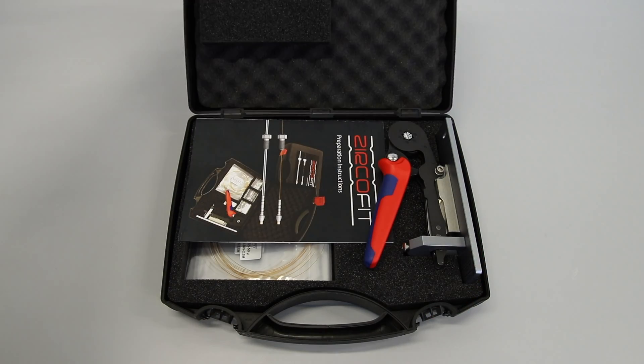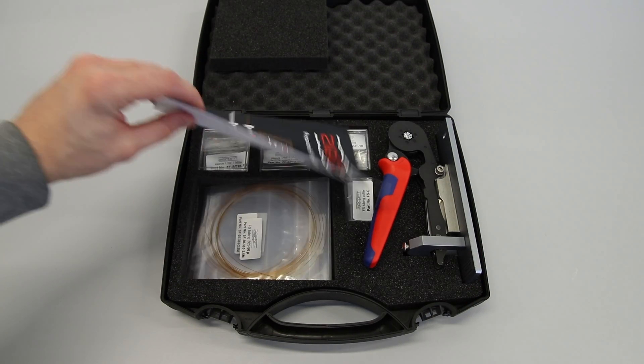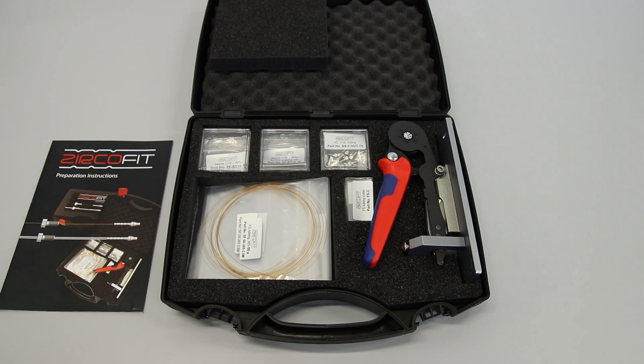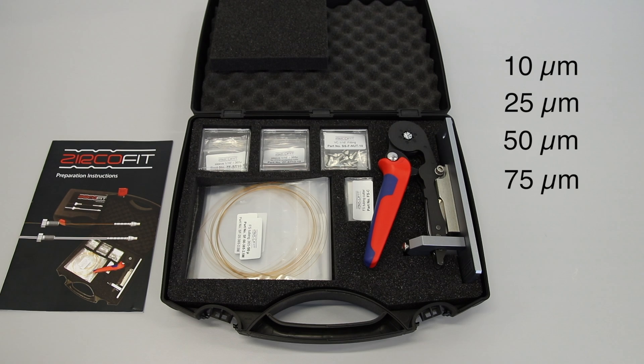The ZercoFit Starter Kit contains all necessary tools and consumables to produce 5 capillaries with protective tubing and 5 without. It also contains fused silica of 10, 25, 50 and 75 micrometers ID.